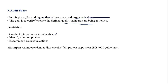We also identify non-compliance and recommend corrective actions — if something has gone wrong, we recommend what corrective steps should be taken. Example: an independent auditor checks if all project steps meet ISO 9001 guidelines. So audit is nothing but a formal inspection.